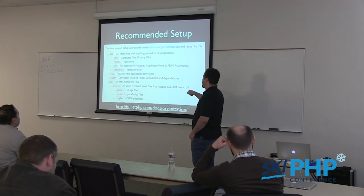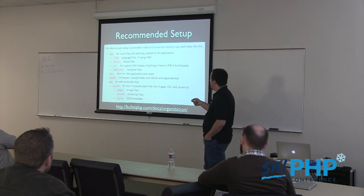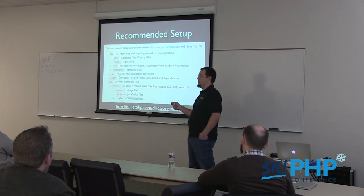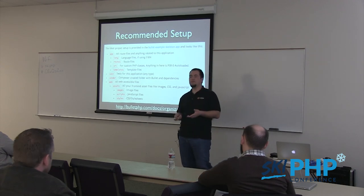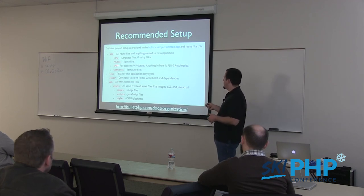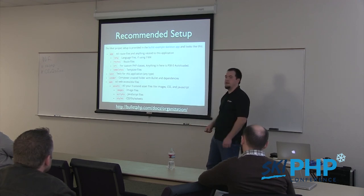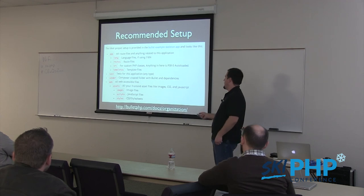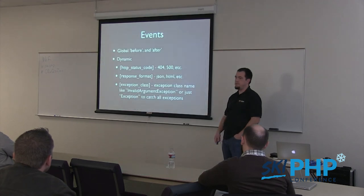Bullet probably has more tests than actual code if you look at the repo. The vendor directory is just Composer - it'll appear when you do composer install. I put everything in app/routes. App/src I wire up to the composer.json file as PSR-0 autoloaded, so any app-specific libraries that are not composer packages get auto-loaded from that directory. The recommended setup is on the website at bullet.php/docs/organization.